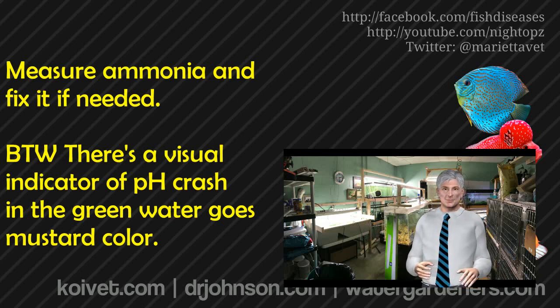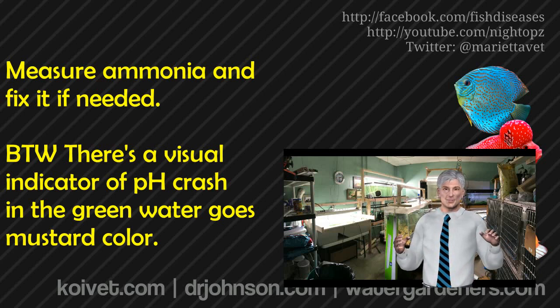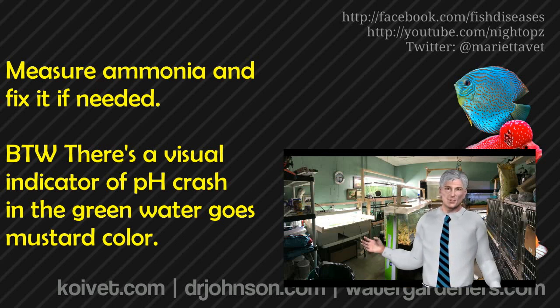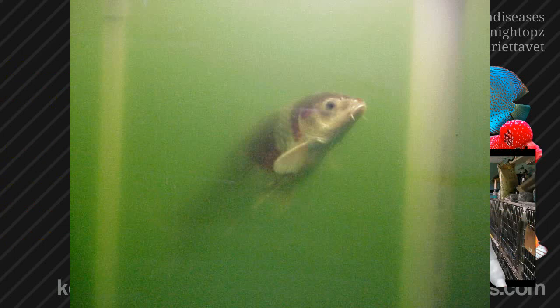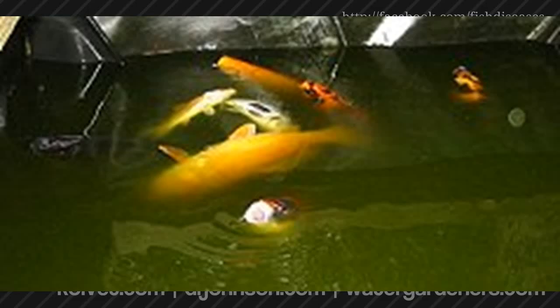Another consideration is a visual sign that the pH has crashed, and it's a good one. If your water is green — like green water in a pond or tank — when the pH crashes that water turns to a mustard color. It's a terrific visual indicator. If you wake up in the morning and your green water has gone to a greenish mustard color, you know right away what happened. Check the pH to confirm, then start bringing it back up.